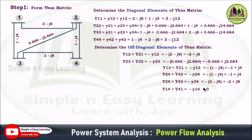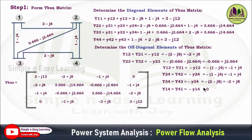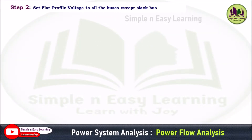Now, enter all the values in matrix format to form the Y-bus matrix. It is a 4×4 matrix, since this is a 4-bus system. Step 2: set flat profile voltage to all buses except the slack bus. We need to consider all bus voltages as 1+j0 or 1∠0°.